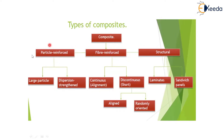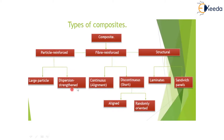Particulate reinforced composite material means if the particles are added as a reinforcement, then we can say that it is a particulate reinforced composite material. Depending on the particle size, it is further divided into large particle reinforced and dispersion strengthened — based on how the particle is dispersed and distributed in the material.